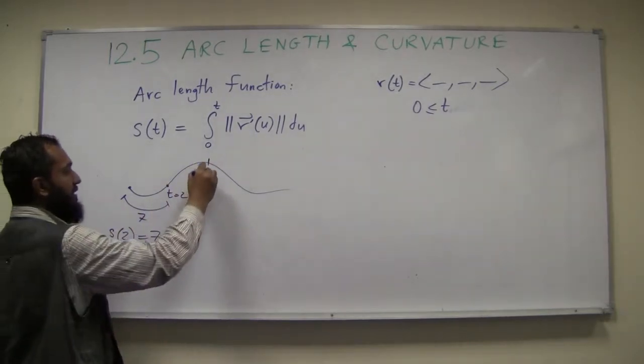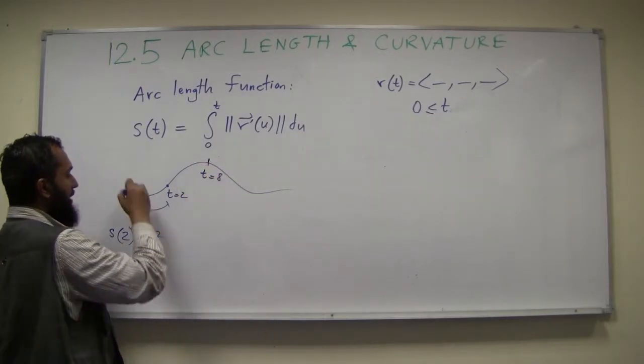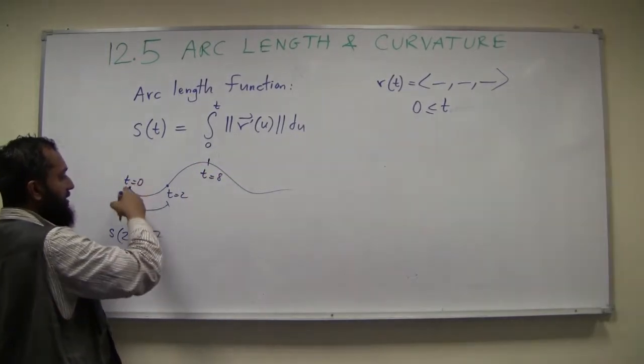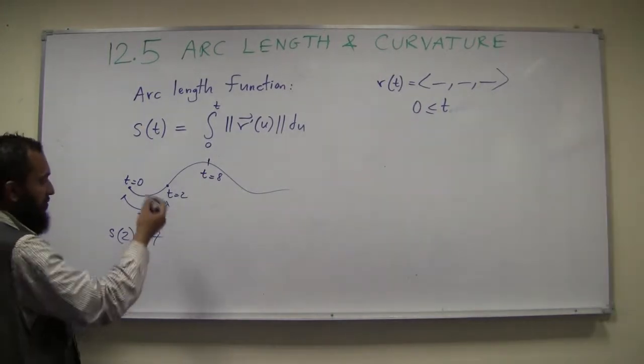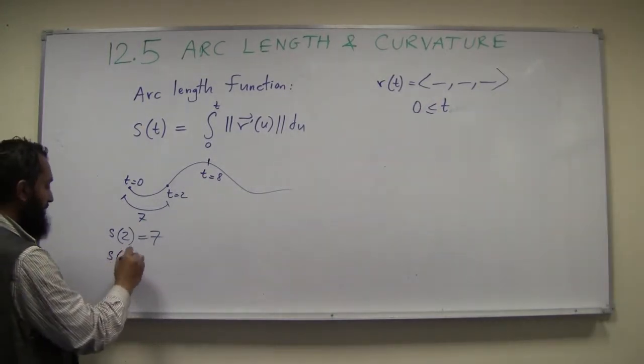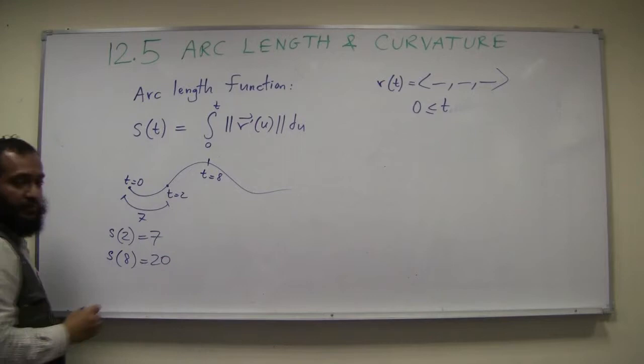Similarly, if this is t equal to 8, and this was t equal to 0, the start, and let's say the length from here to here is 20, then s(8) would be 20, okay?